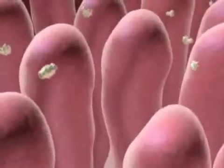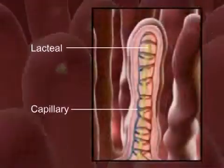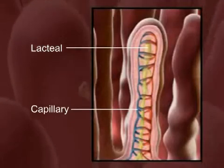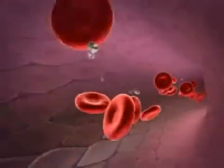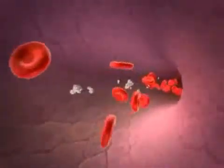The walls are covered with villi where nutrient absorption takes place. The structure of each villus contains a capillary and lacteal to pick up the digested nutrients. The nutrients are now transported by the blood to all the cells of the body.